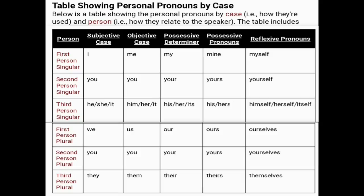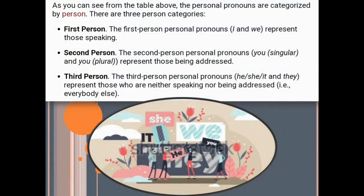You need to remember this table for the proper use of different types of pronouns in a sentence. Personal pronouns are categorized by person. There are three person categories: first, second, and third. First person: the pronouns I and we represent those who are speaking — the speaker. Second person: you (singular and plural) represents those being addressed — the listener. Third person: he, she, it, and they represent those who are neither speaking nor being addressed — everybody else, about whom you are talking.